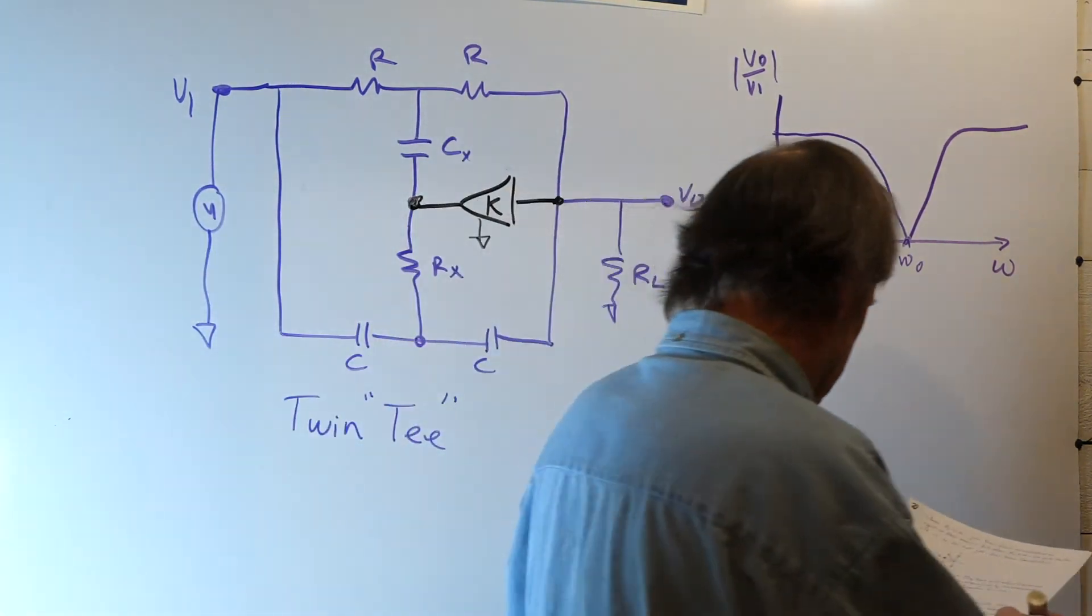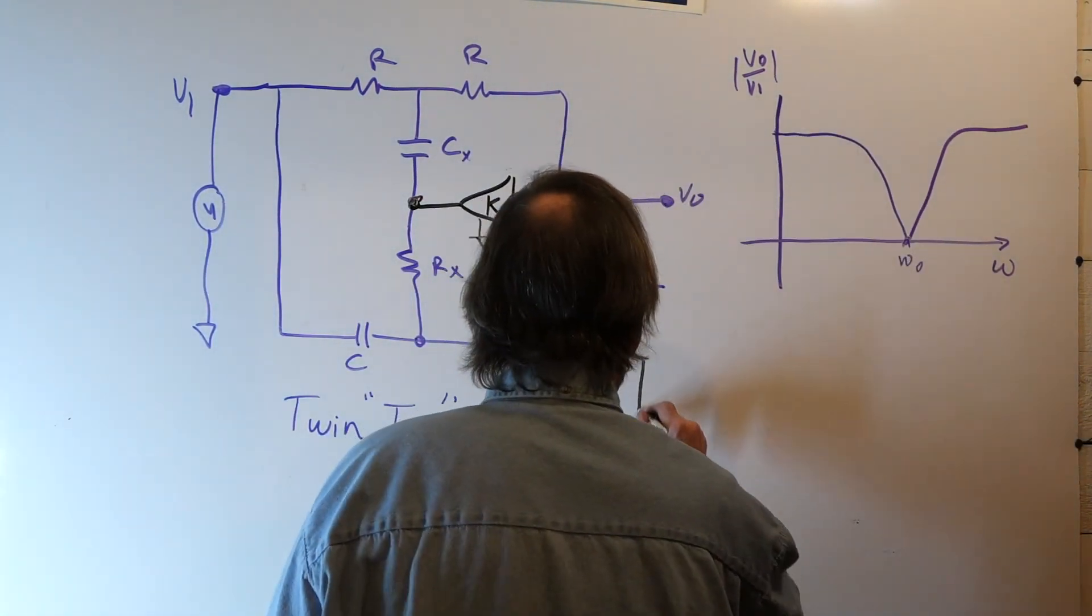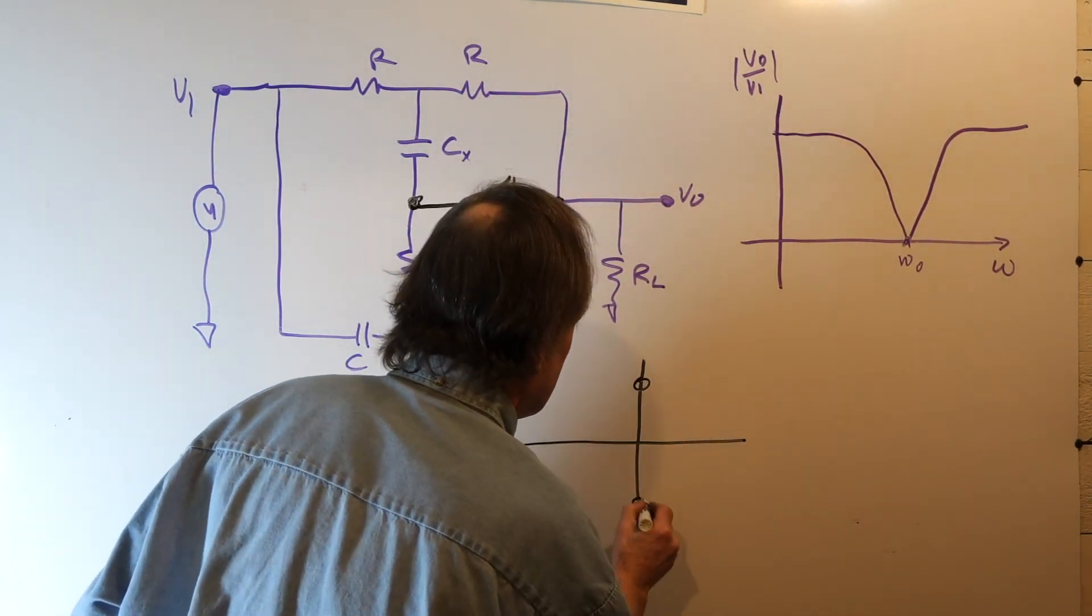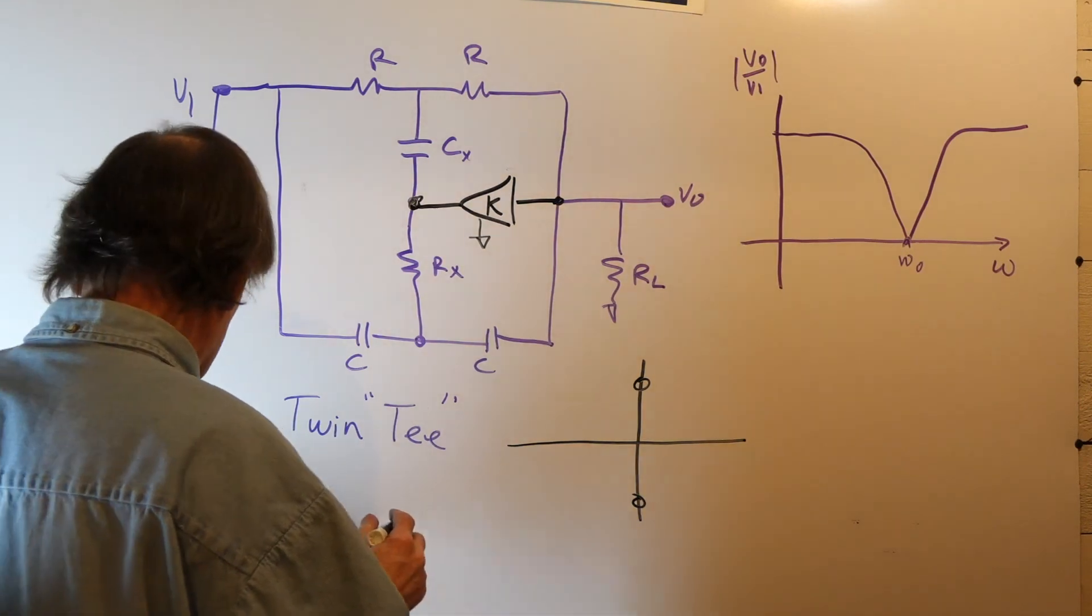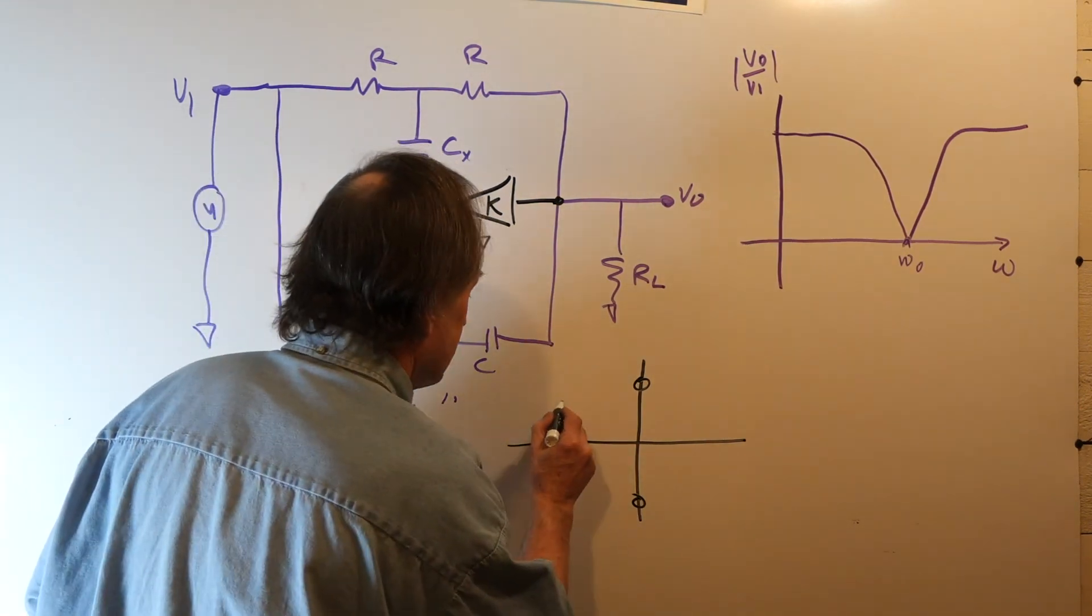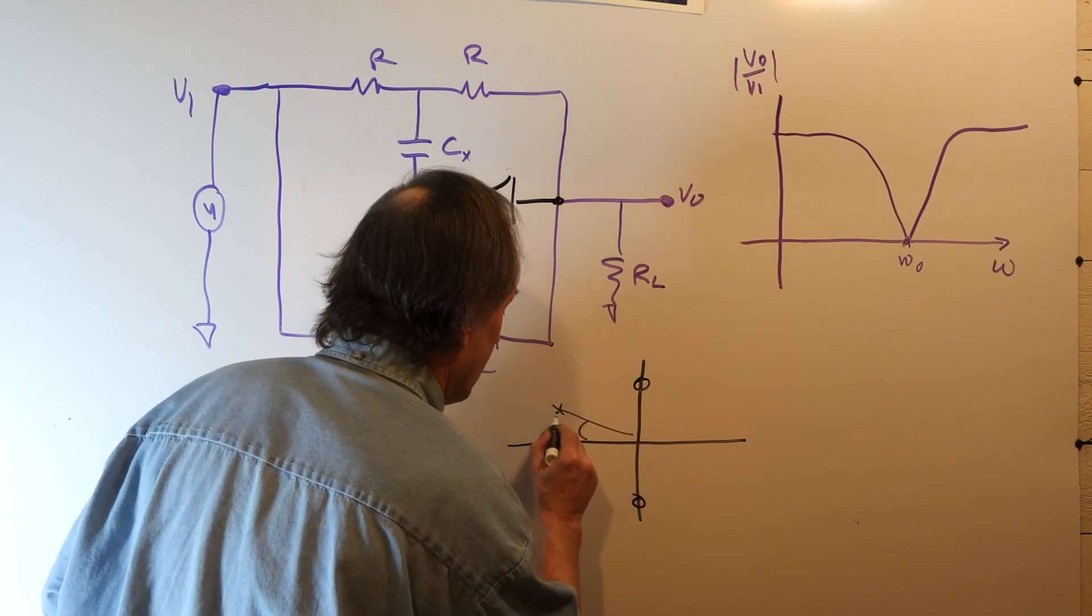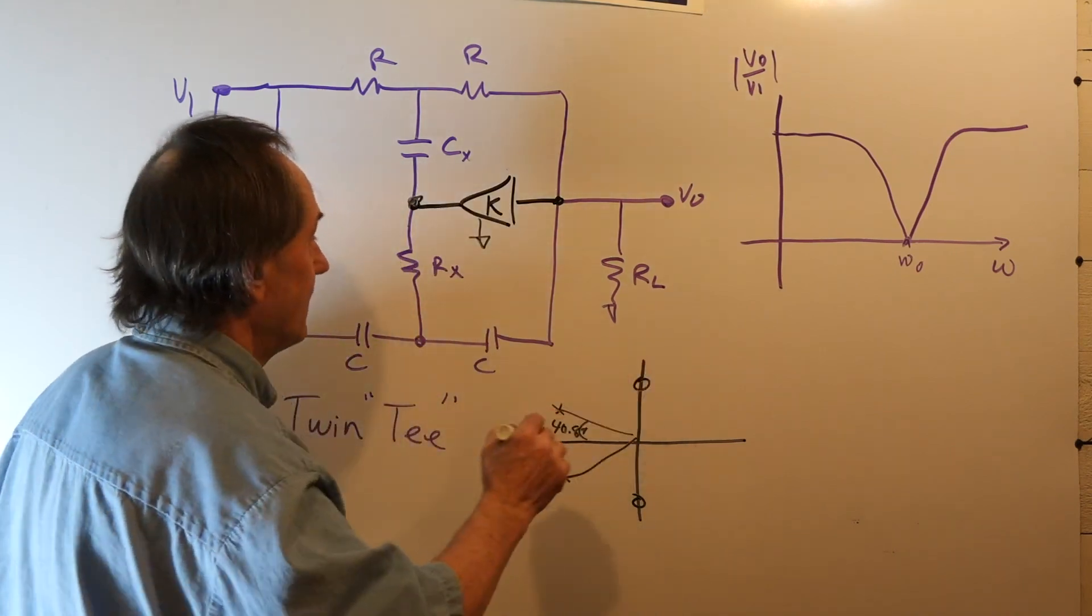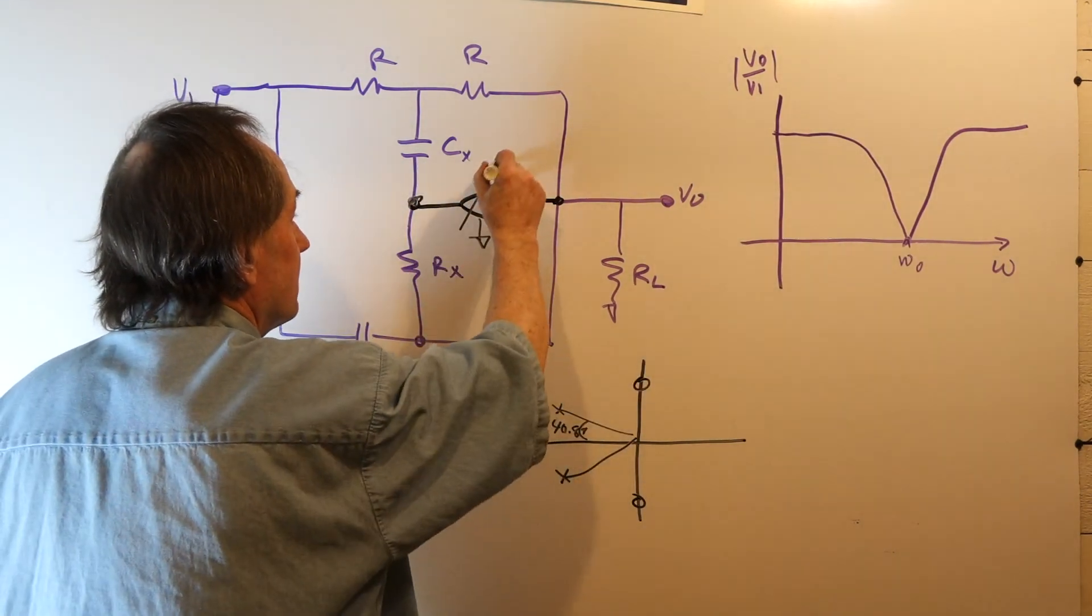And what happens is if you look at the pole zero plot, the zeros are still on the J omega axis, but what happens is the poles that were out here at 40.89 degrees